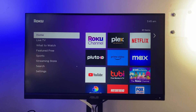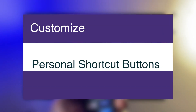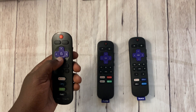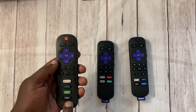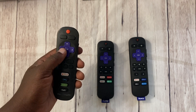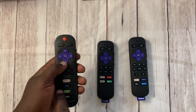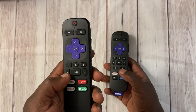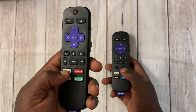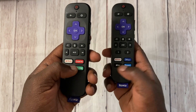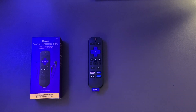Hey, what's up guys, David here from Dignited. Today I want to show you how to customize the personal shortcut buttons on the Roku Voice Remote Pro. Almost every Roku remote comes with some preset channel buttons that act as shortcuts to popular streaming services such as Netflix, Disney Plus, Apple TV Plus, Paramount, Hulu, Sling TV, and so forth. Roku actually gets paid from these companies to occupy that real estate on their remote.